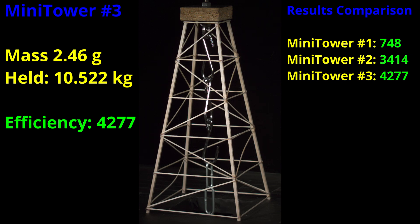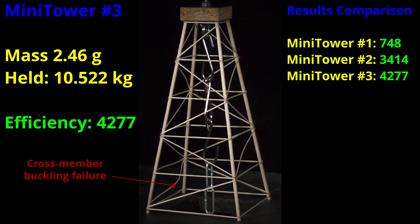Again, I'll freeze the video so we can see exactly which part started to fail first. This time it was a lower diagonal cross member that started to buckle first. That is two designs in a row where the failure point was a long diagonal cross member buckling. It looks like we need to make those cross members stronger. So what should we do?